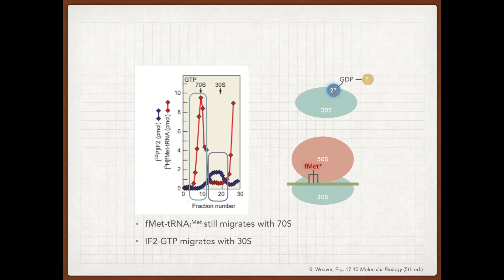So from this data, we were able to determine that GTP hydrolysis does indeed allow IF2 to dissociate from the 70S initiation complex.